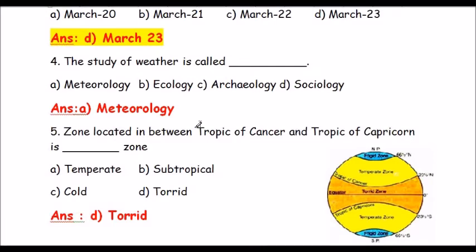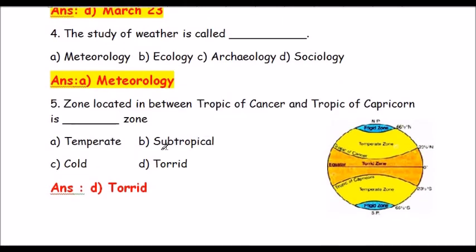Question number 4: The study of weather is called what? Options are a) meteorology, b) ecology, c) archaeology, d) sociology. The study of weather is called meteorology — option a.